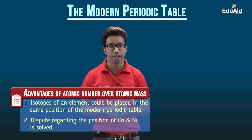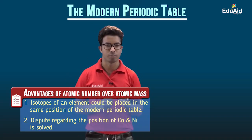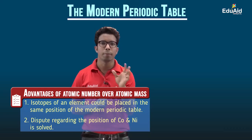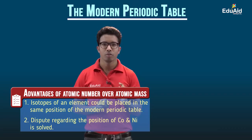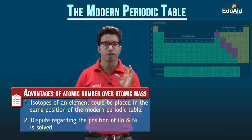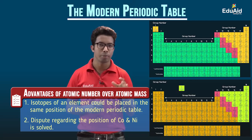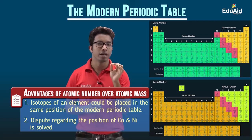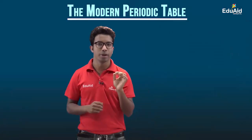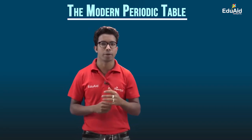The third limitation concerned the position of hydrogen. Since hydrogen has properties similar to both alkali metals and halogens, it could not be given one fixed position in Mendeleev's periodic table. This controversy still remains — till now the position of hydrogen is not fixed. In some periodic tables, hydrogen is written at the middle top position; in others it is written in the first position. When the properties of group 1 are studied, they start from lithium, not hydrogen. So this limitation is still present, though the other limitations are solved by choosing atomic number instead of atomic mass.